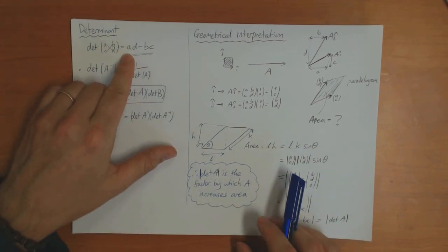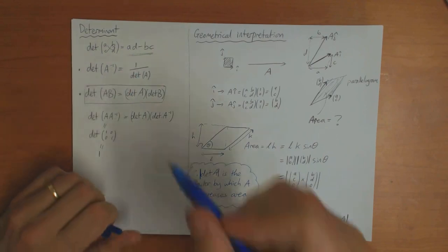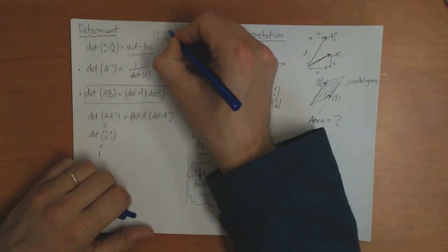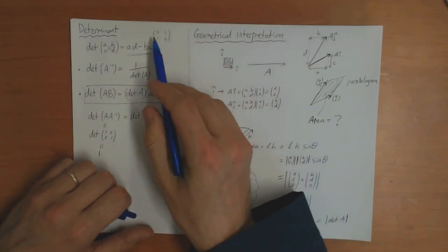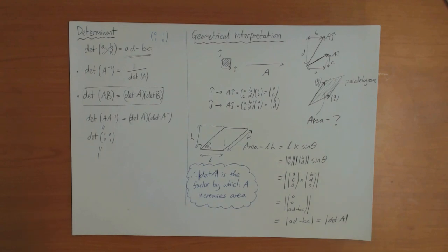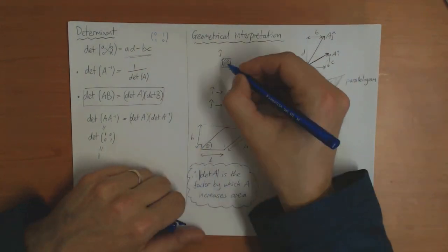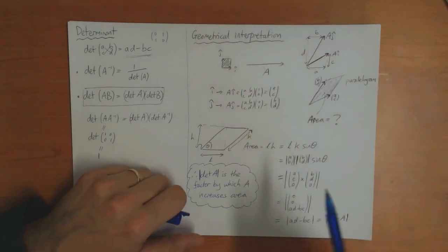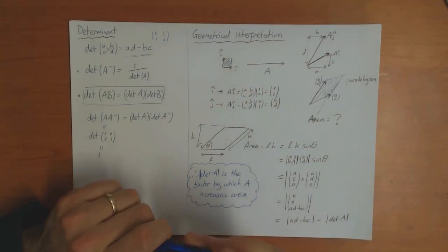One thing I haven't explained: the scale factor in area is the absolute value of the determinant, but the determinant can be negative. For example, if I take the matrix (0, 1; 1, 0), the determinant of this matrix is minus 1. So what does the minus sign mean? It's to do with the orientation of the area.